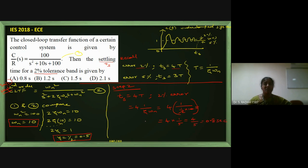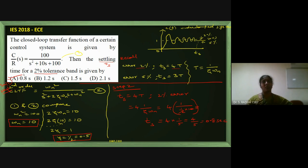The settling time is 0.8 seconds. Option A is the correct answer. This is solved by jumping between 5 or 6 standard formulas using the given transfer function details.